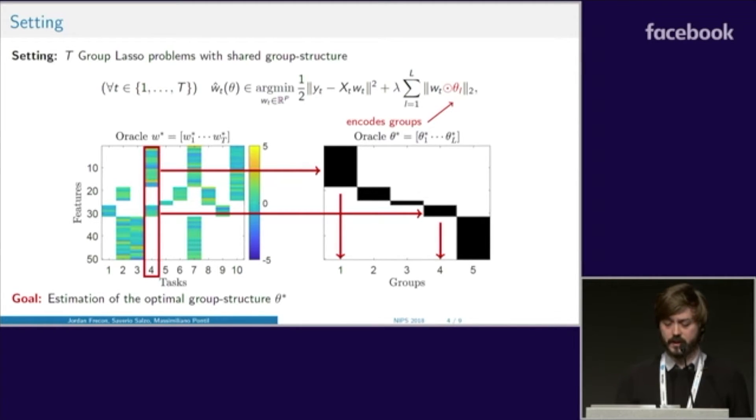On the left side, you can see different regressors. Here, for example, the fourth task only used the first and fourth groups. Now we have recast the problem of learning the groups as the problem of learning this binary matrix theta.